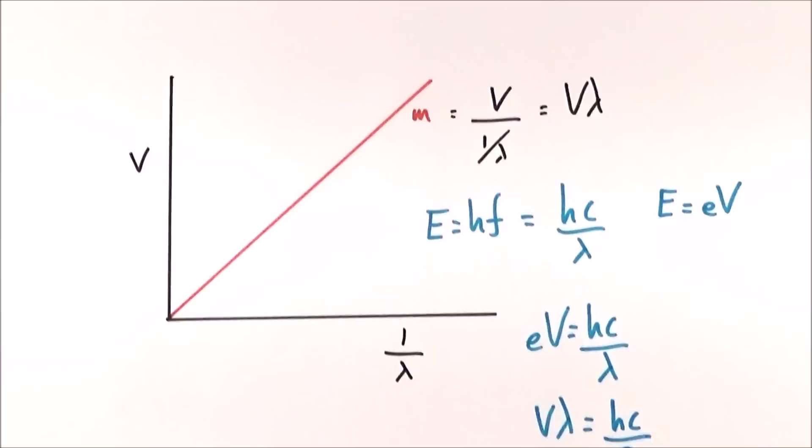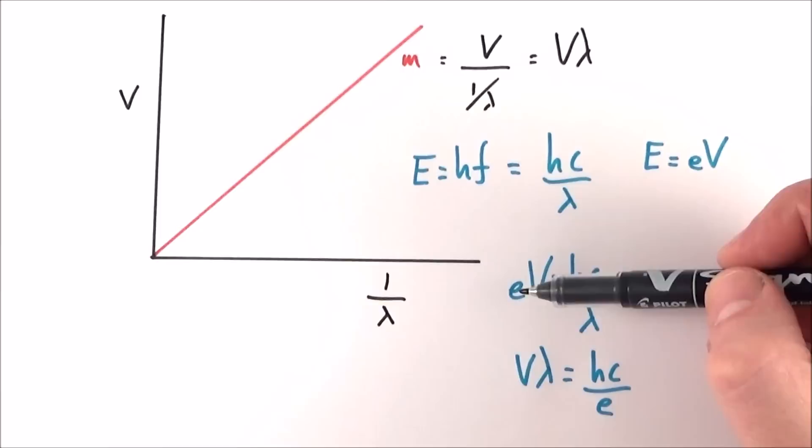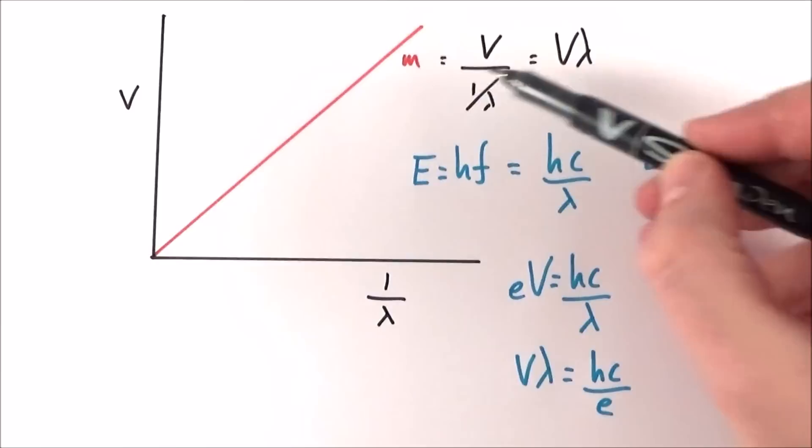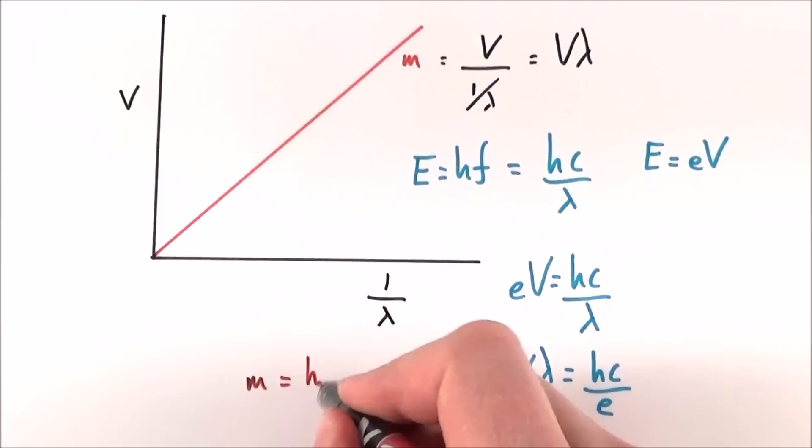So what I've really done here is I've had a look at the energy of each of the photons given off, and looked at how that corresponds to the wavelength of that light. And by rearranging this equation, by bringing the lambda up and dividing both sides by the charge on the electron, we can say that v lambda is equal to hc over e. But up here, I said that v lambda is equal to the gradient of that line. So that means that the gradient, m, is equal to hc over e. That means if you work out the gradient, you times it by the charge on the electron, and you divide by the speed of light, you will find out the value of h, which is Planck's constant.